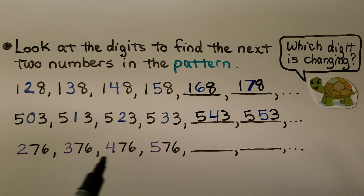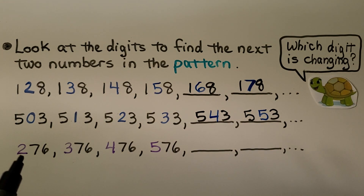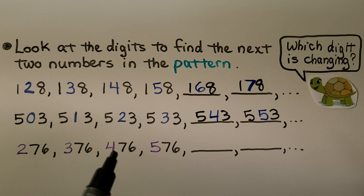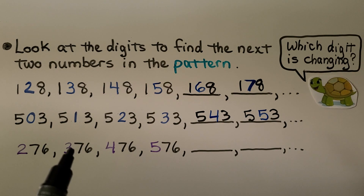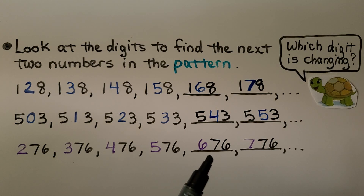Now look at this number pattern. Do you know what the next two numbers would be? We have 276, 376, 476, 576. The 10s and 1s are staying the same and the 100s are changing — it's going up by 100 each time. If you said 676 and 776, you're right.